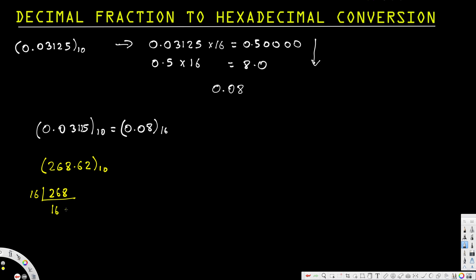Dividing 268 by 16 gives 16 with a remainder of 12. Dividing 16 by 16 gives 1 with a remainder of 0. Dividing 1 by 16 gives 0 with a remainder of 1. So we end up with remainders 1, 0, 12.